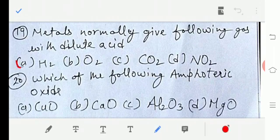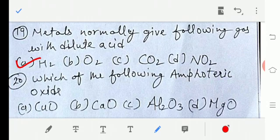Question number 20: Which of the following is an amphoteric oxide? So amphoteric oxides are basically substances that react with both acids and bases. The answer would be option number C, Al2O3.